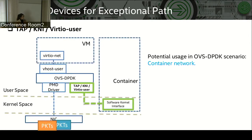This slide introduces the potential usage of these virtual devices. OVS can support VM network through vhost user, but it's hard to deal with kernel-based container network. KNA and virtual user can be used as exceptional paths and provide a solution for container network. In this picture, OVS DPDK receives packets from NIC and redirects packets to VM through vhost user and virtio net, and can also redirect packets to container kernel interface through these three virtual devices.